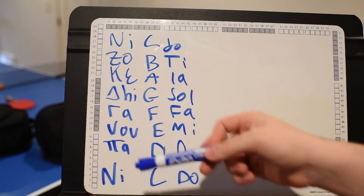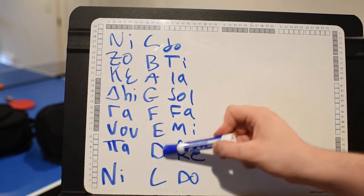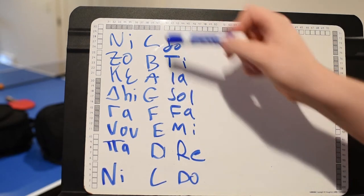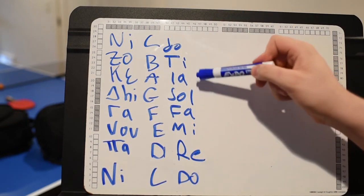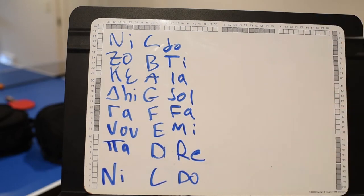It starts on Ni. Ni Pa Vo Gha Di Keza Ni, which corresponds to C D E F G A B C, or Do Re Mi Fa Sol La Ti Do. Now knowing this, we can further analyze the scale.